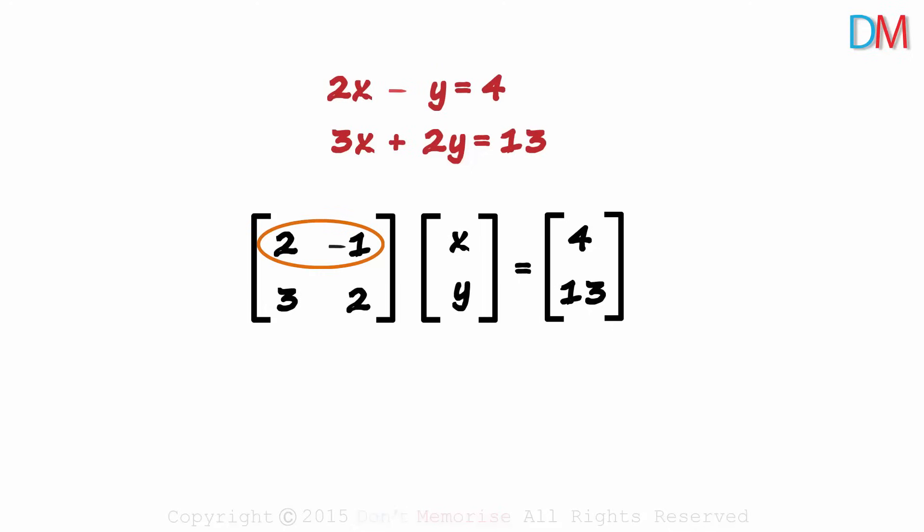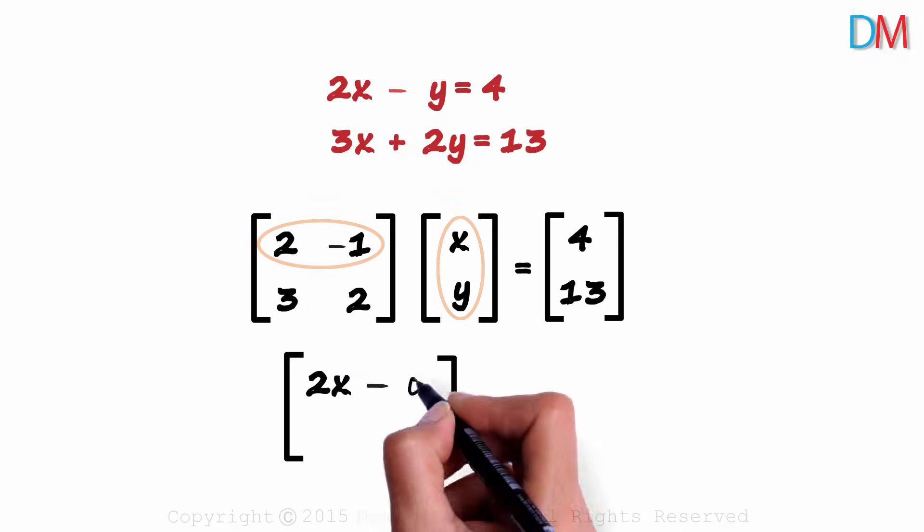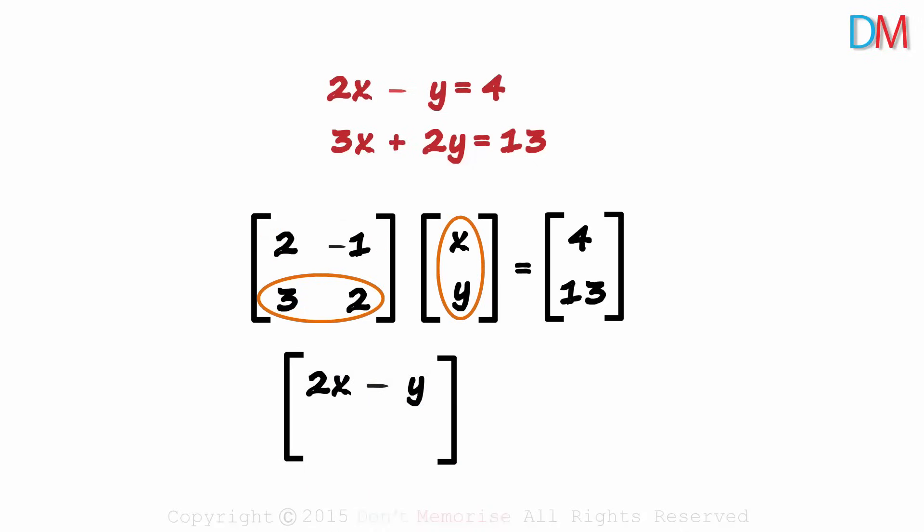So we multiply the first row of this matrix with the first column of this matrix and write the product here. And then multiply the second row of this matrix with the first column of this matrix and write the product here. What will be the product of these two? It will be 2x minus y and the product of these two will be 3x plus 2y. This is the product of these two matrices.